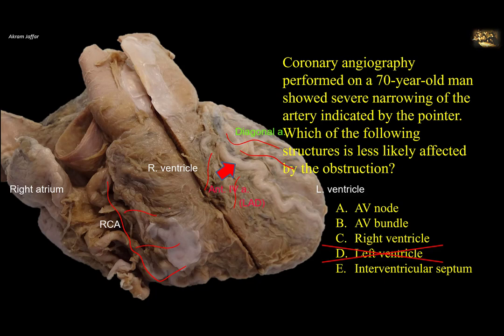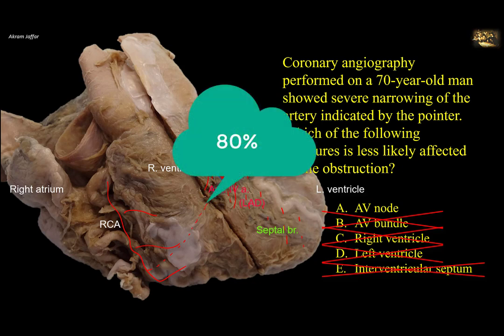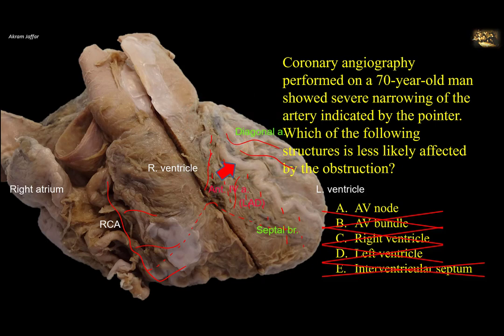Because the right ventricle receives some small branches from the left anterior descending, it might also be affected by obstruction of the LAD. Left anterior descending also supplies septal branches — they pass into the interventricular septum, including the AV bundle of the conducting system, which passes through the membranous part of the interventricular septum and then splits into right and left bundle branches. So the AV bundle might be affected. Now regarding the AV node, in 80% of individuals, the AV nodal artery is given from the right coronary artery, just before it gives its posterior interventricular branch.